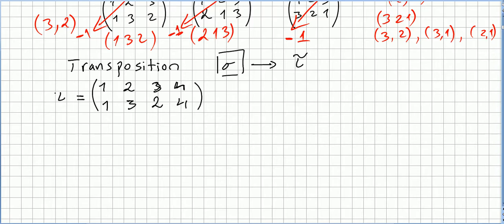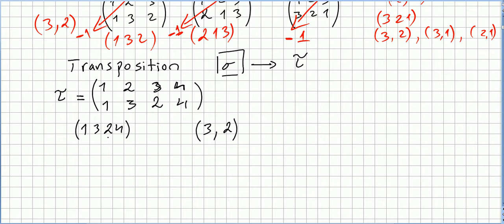This is a transposition — a permutation that interchanges two numbers. Let us pick this one and count the inversions. One has no inversion. Three has one inversion because two is to the right of three and is smaller. Four is bigger than three, and two has no right-hand number smaller than two, so the only inversion is that one.